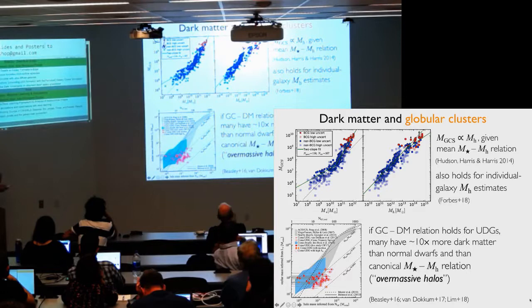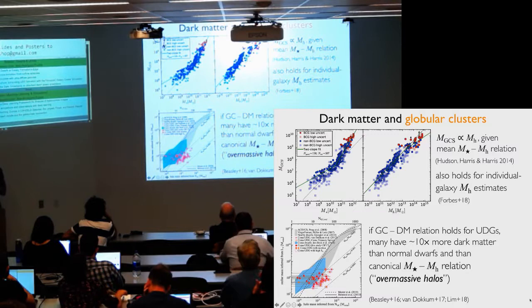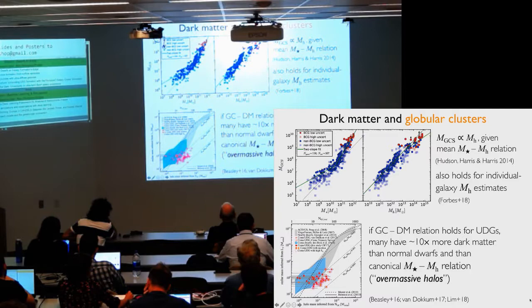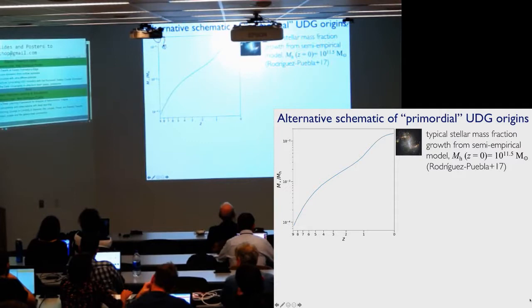So order of magnitude more dark matter for quite a few of them. We call these over-massive halos. So this is telling us that there could be a lot of scatter at the lower halo masses, say below 10 to the 10, but this is up at 10 to the 11 halo mass, which is maybe not where we're expecting this kind of stochasticity if it's true.